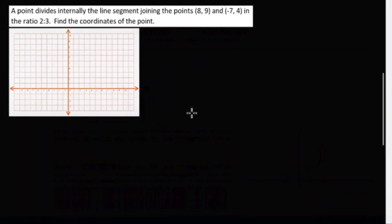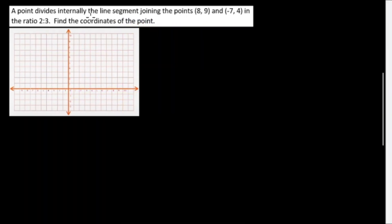Example: A point divides internally the line segment joining the points (8, 9) and (negative 7, 4) in the ratio 2 to 3. Find the coordinates of the point.